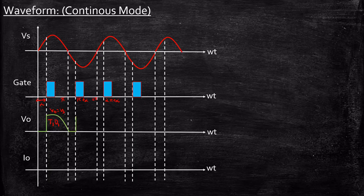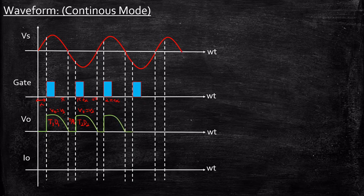Again during the next cycle, T2 and D2 will be conducting. Because of T2 and D2 the output voltage Vout was equal to Vs — this is because of T1 D2. Again the cycle repeats, next it becomes equal to zero, again starts conducting, again becomes equal to zero, and the cycle repeats in this particular fashion. This is the output voltage waveform.